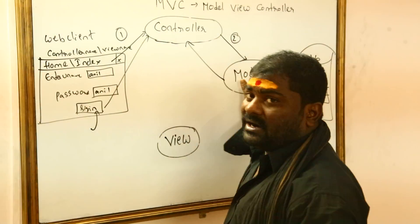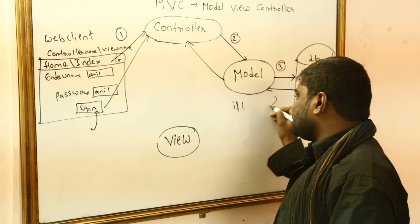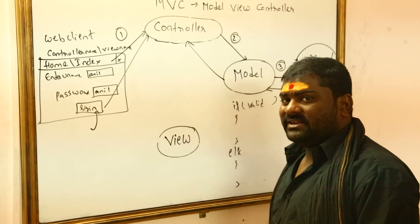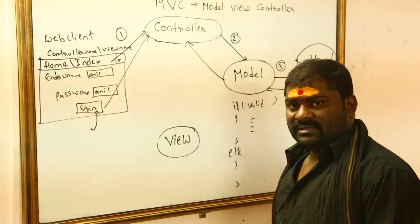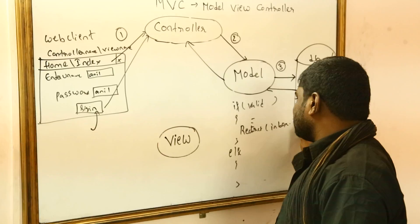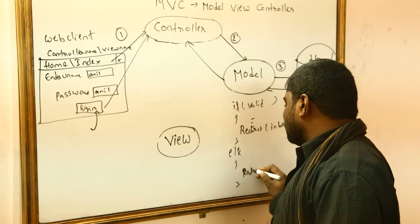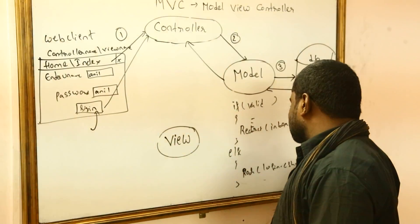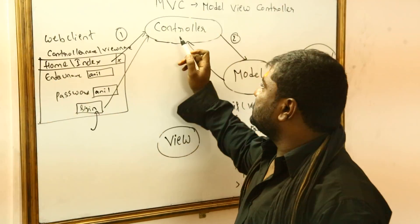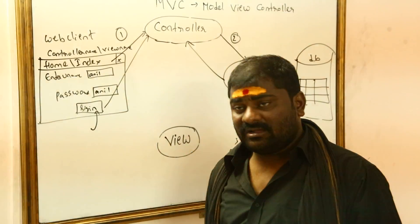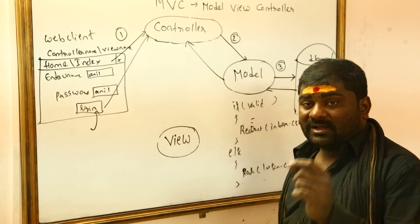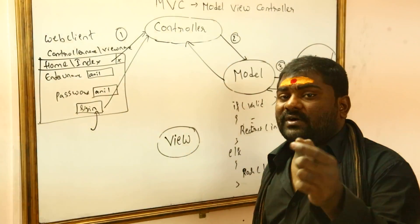The controller forwards the request to the model. In the model, the database-related code is written. If the login user is valid, do something; else, do something else. The model communicates with the database and determines either true or false. If the login user is valid, it returns true; otherwise, it returns false.